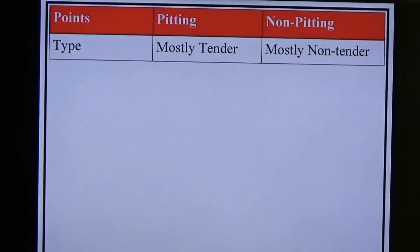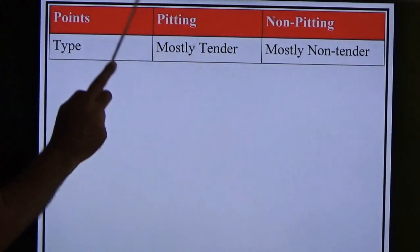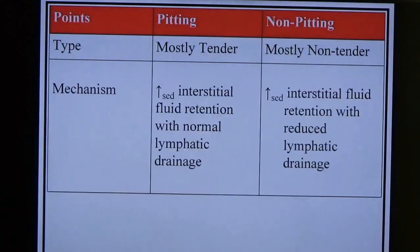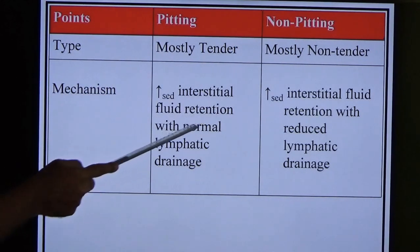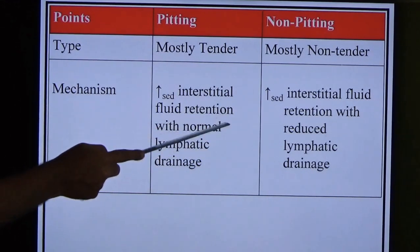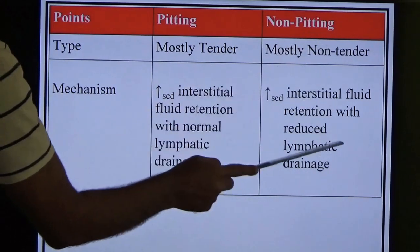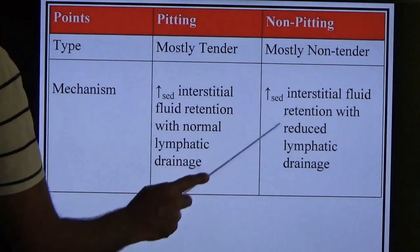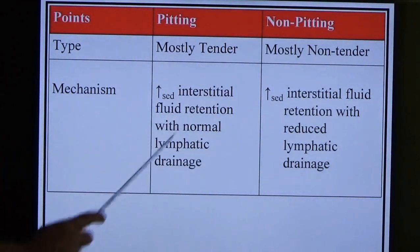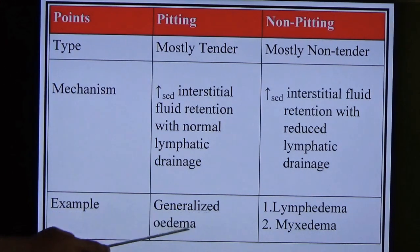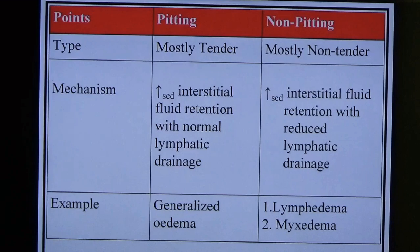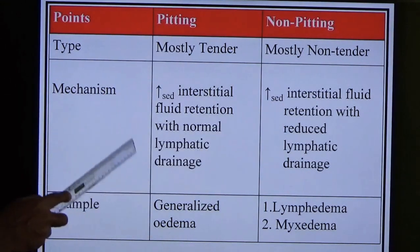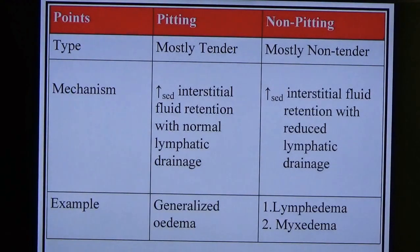Pitting edema vs. non-pitting edema: pitting edema is mostly tender (painful); non-pitting edema is mostly non-tender. Mechanism: pitting edema has increased interstitial fluid retention with normal lymphatic drainage; non-pitting edema has reduced/obstructed lymphatic drainage. Examples: all generalized edemas are pitting; non-pitting includes lymphedema and myxedema. Key difference: in pitting, lymphatic drainage is normal; in non-pitting, lymphatic drainage is defective.